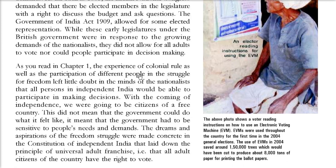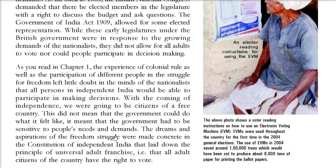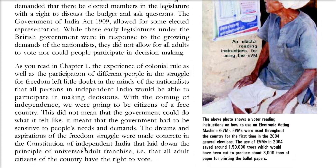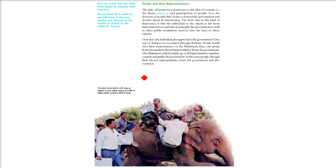What we experienced in the past was under colonial rule. But with the coming of independence, we are going to be citizens of a free country. The constitution of independent India laid down the principle of universal adult franchise. Previously it was there only on pressure and not all adults were allowed to vote. But after the constitution was made, universal adult franchise means all adult citizens of the country have the right to vote - everyone who is 18 plus, regardless of caste, creed, religion or anything.